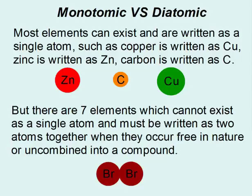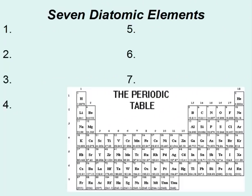Monatomic versus diatomic. Most elements can exist and are written as a single atom, such as copper is just written Cu, zinc is written Zn, carbon is just written C. But there are seven elements which cannot exist as a single atom and must be written as two atoms together when they occur free in nature or uncombined into a compound. Those seven elements we refer to as diatomic elements. There are seven of them. They start at number seven and they make a seven.